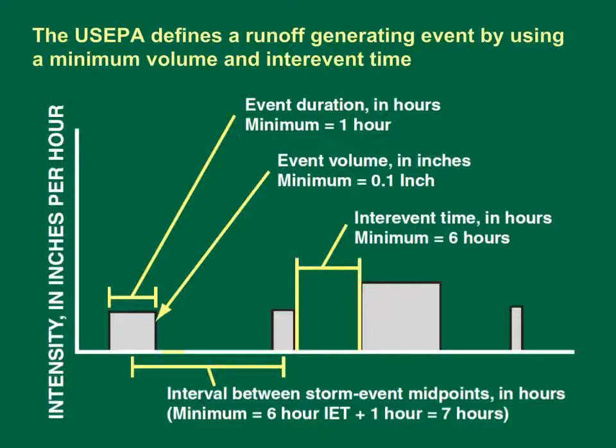The United States Environmental Protection Agency has defined a runoff generating storm event as having a minimum volume of 0.1 inch of liquid precipitation and a minimum inter-event time of six hours. The minimum event duration of one hour is a result of using hourly precipitation data. The minimum interval between storm event midpoints is a result of the six-hour minimum inter-event time added to the midpoints of two one-hour events.